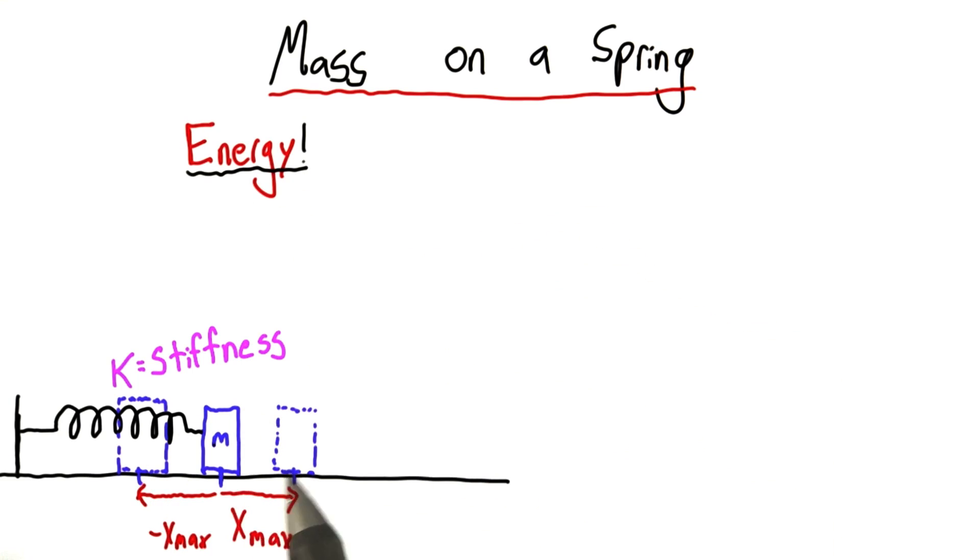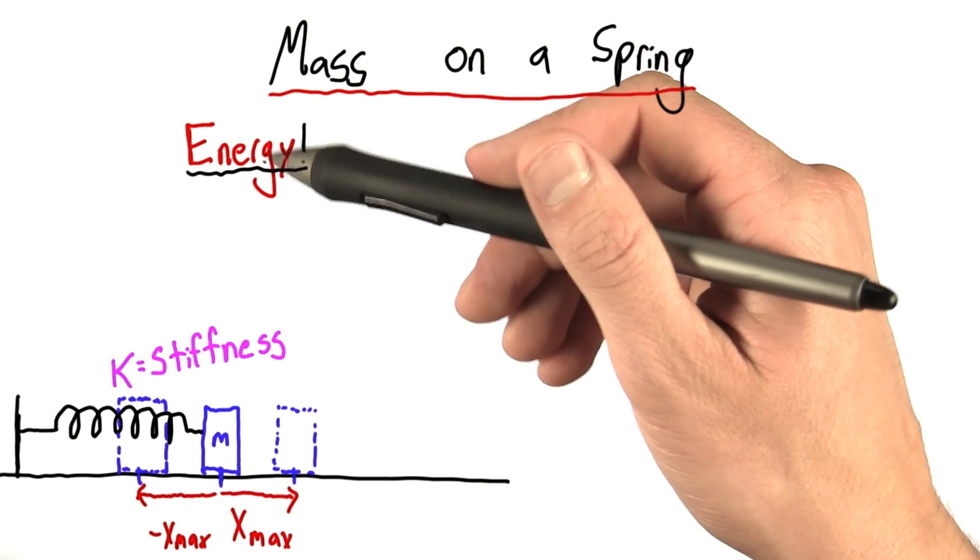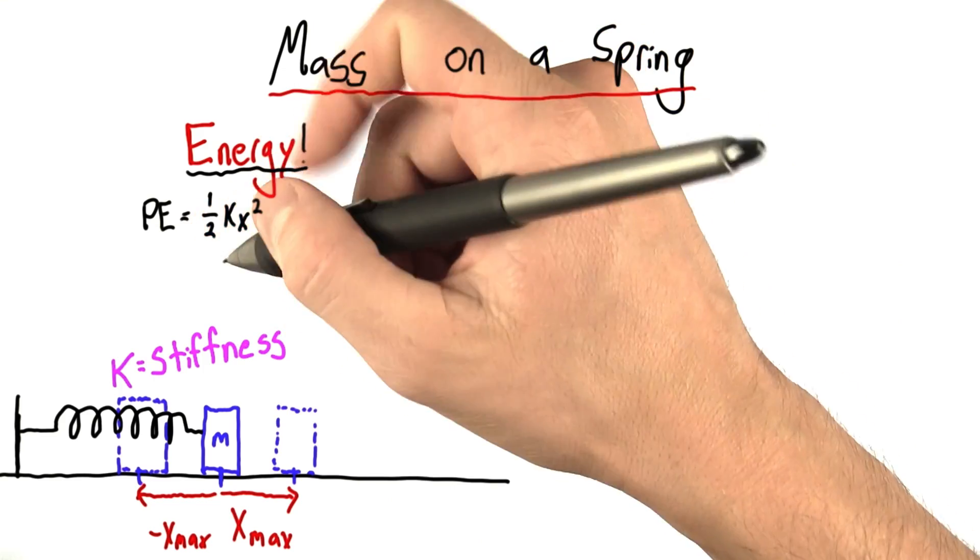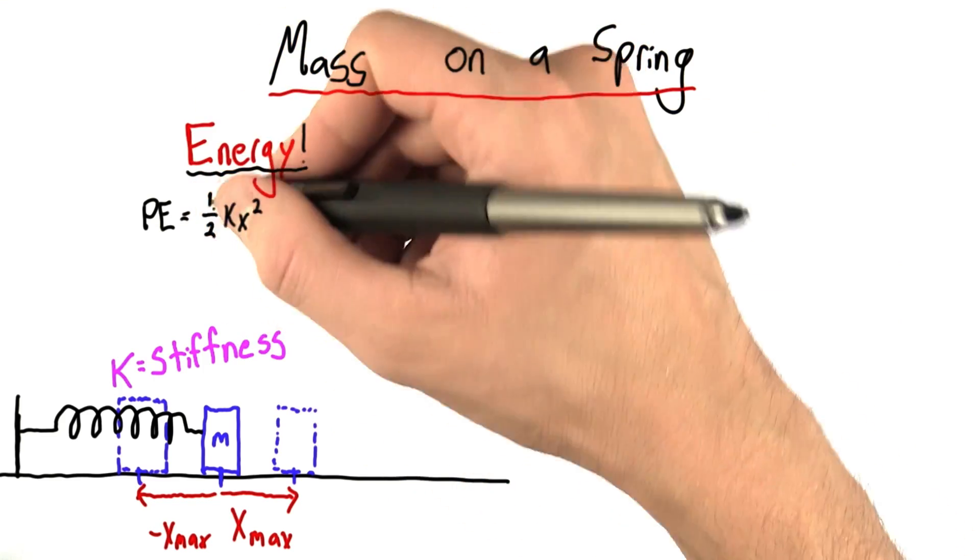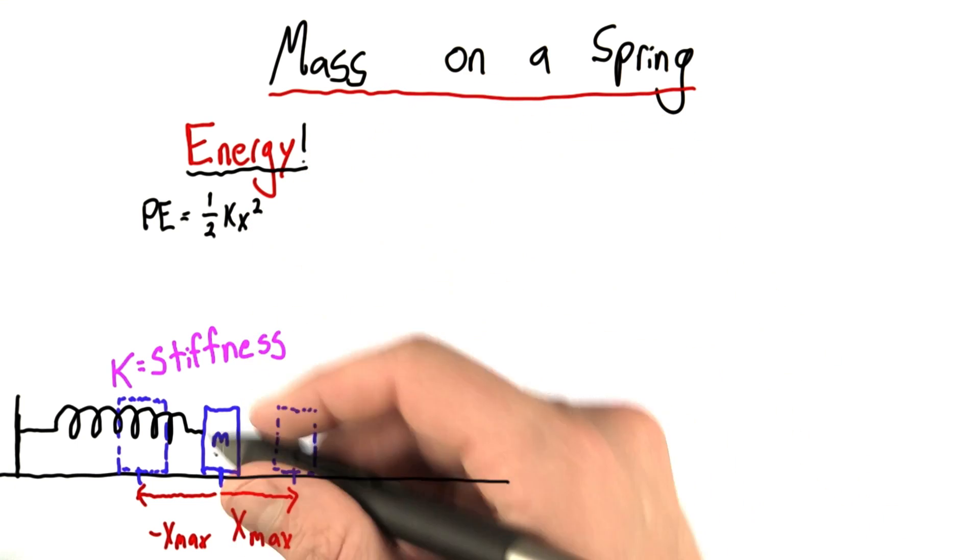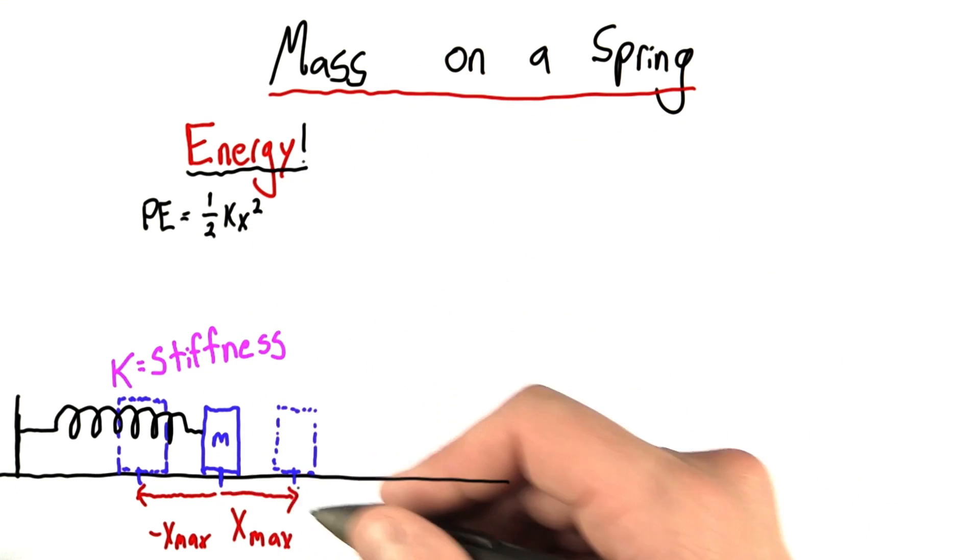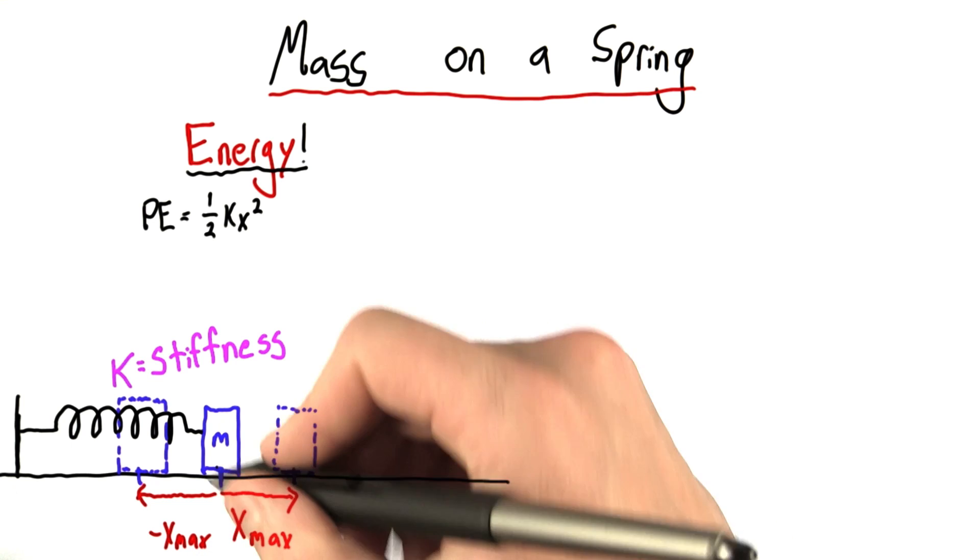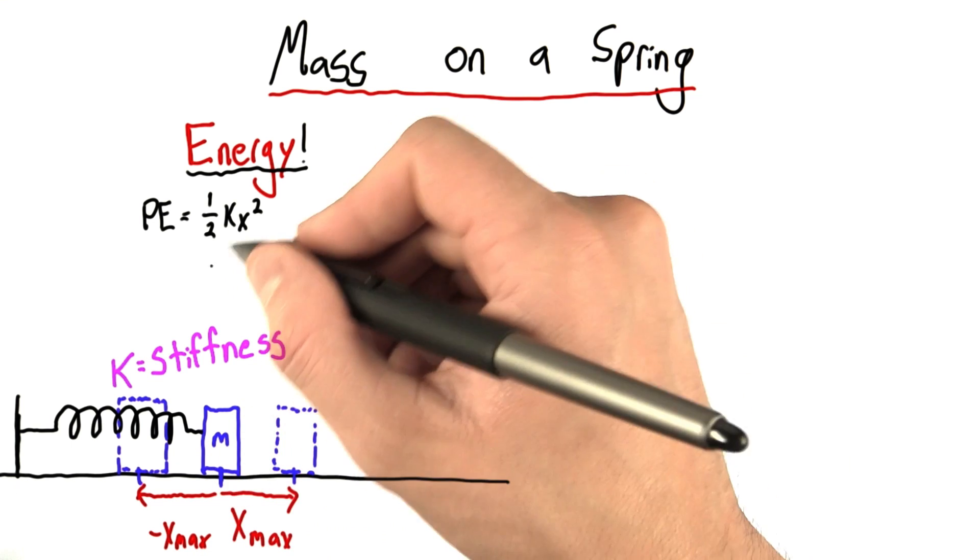Now what I want to do is analyze this spring in terms of energy, which we talked about a ton in the last unit. Well it turns out that the potential energy stored in a spring is equal to half the spring constant, k, times x squared. x in this case would be whatever the current displacement from the equilibrium is. So when this mass is at the equilibrium, x would be 0.